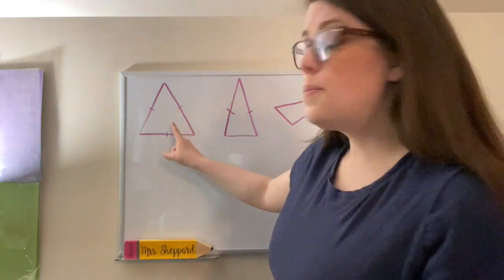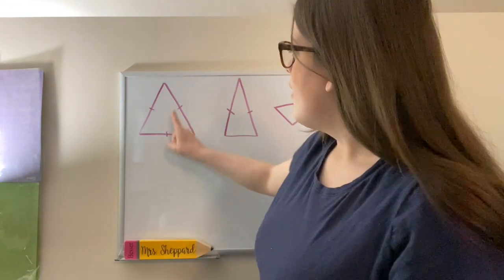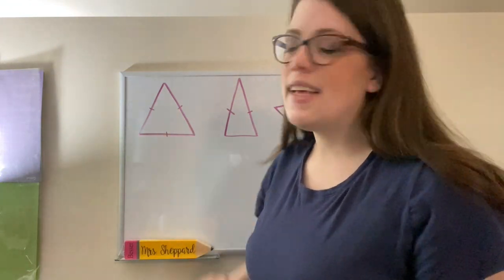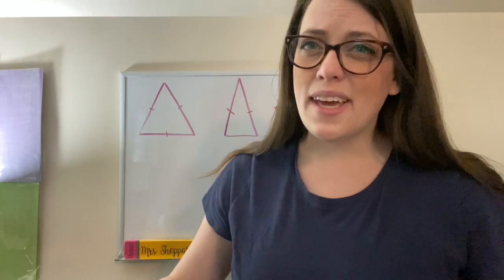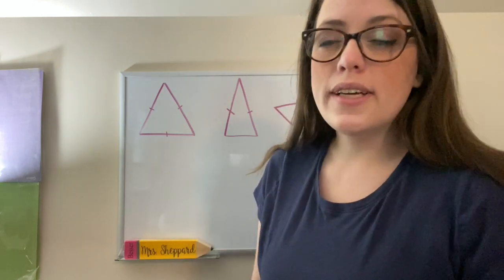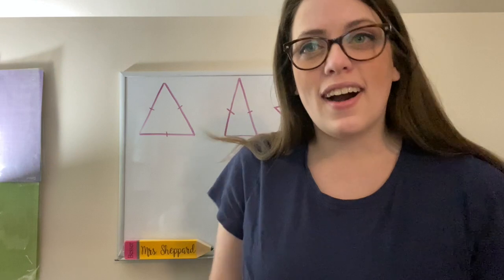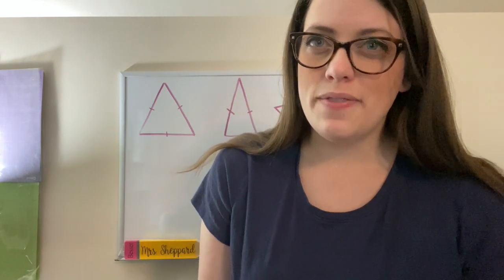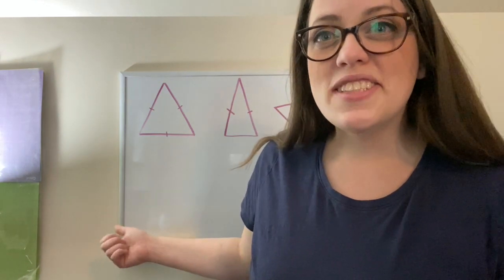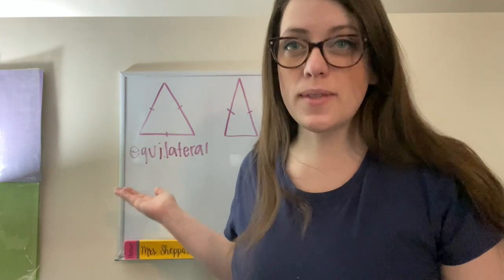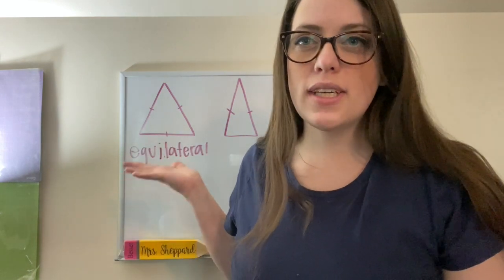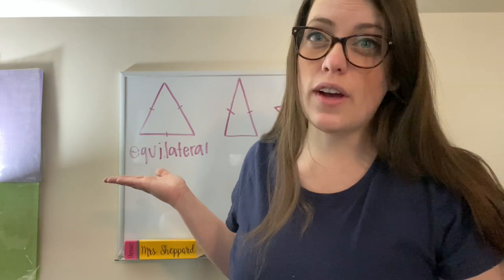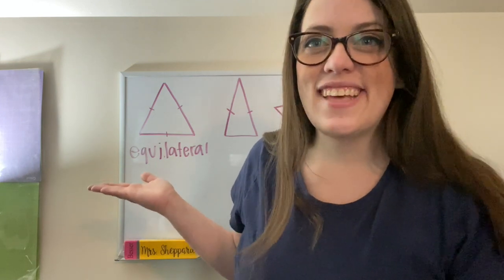So in this particular triangle, this side, this side, and this side are all the same length. I know that because they have the same marking on the triangle. I don't have to measure. This type of triangle is called an equilateral triangle. That means that all three sides of the triangle are exactly the same.